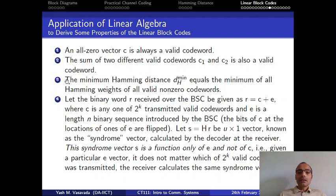The third property is that the minimum hemming distance of this linear block code is equal to the minimum of the hemming weights of all valid non-zero code words. This is a pretty important property and we will make use of it momentarily.